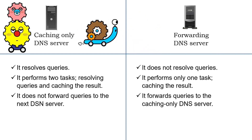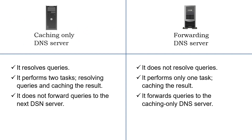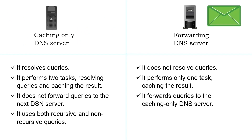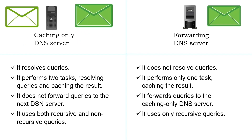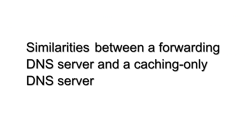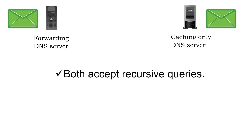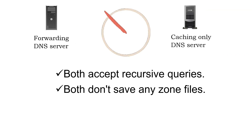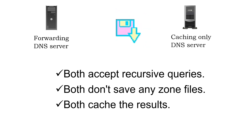A caching-only server resolves queries and does not forward them to the next DNS server. A forwarding DNS server uses only recursive queries, while a caching-only DNS server uses both recursive and non-recursive queries. Neither saves any zone files, but both cache the results.